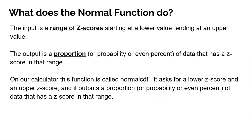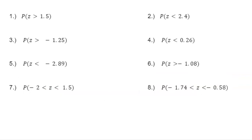How does this function take a range of z-scores and output a proportion of data? To be honest, that's some pretty advanced calculus you do not need to know for this lesson. Just be thankful you have a calculator that can get this for you. The normal function on a TI-84 calculator is called normalCDF. It takes a lower z-score to an upper z-score — a range of two z-scores — and outputs the proportion of data in that z-score range. Let's look at several examples.